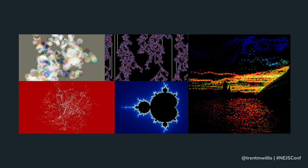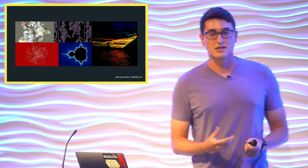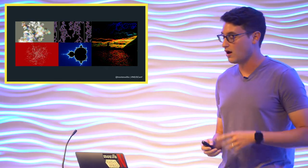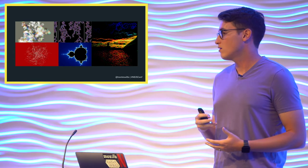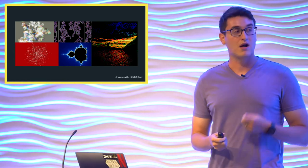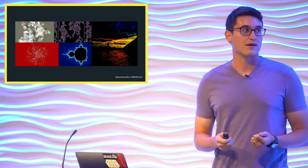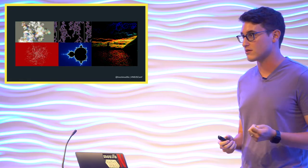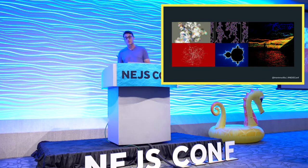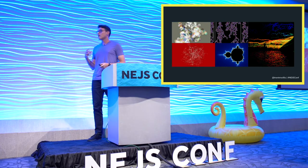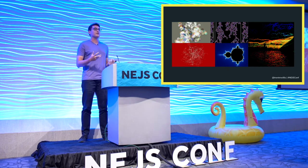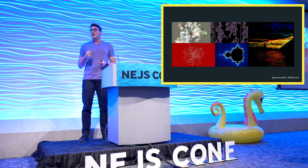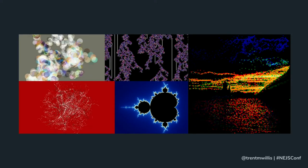Some of the commonalities you'll see between these images is that there are often recurring patterns, some movement throughout, and some randomness — but also some order. These don't necessarily look like a bunch of random pixels thrown onto a screen. That's because they all follow an algorithm, and a lot of those algorithms have some element of randomness to it, which makes it generative and kind of unknowable, which makes it interesting.